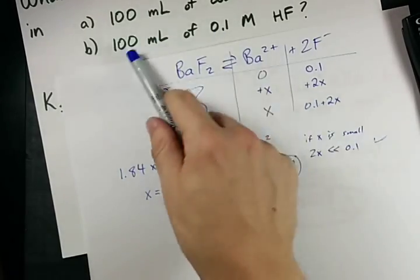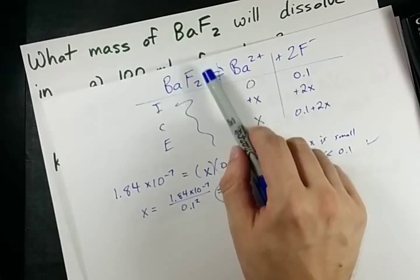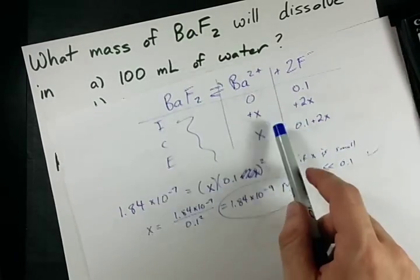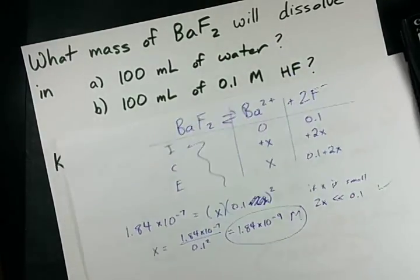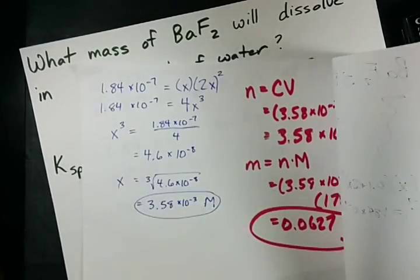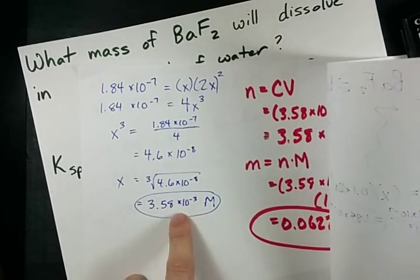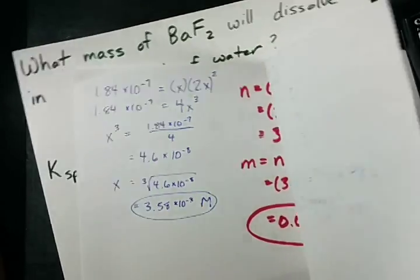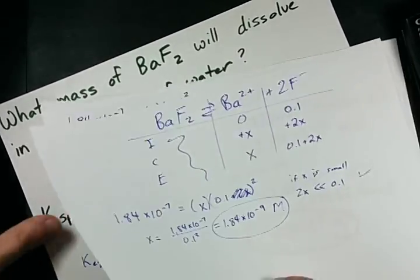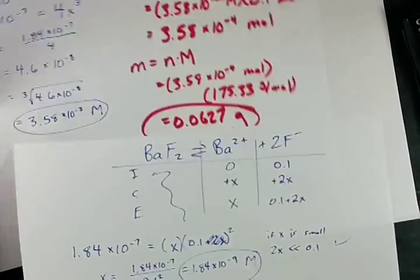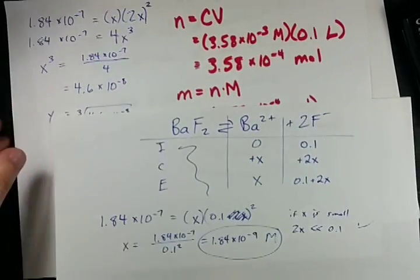And I now have the number of moles per liter of this that will dissolve in my HF. Note how much less that is than the amount that would dissolve in my pure water. But again, this asks for mass. So I've got to convert it to mass the same way.